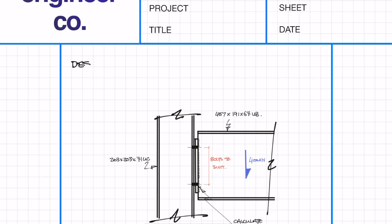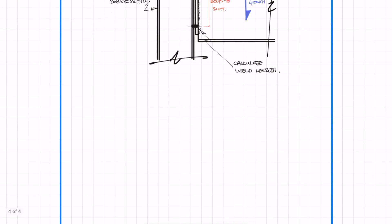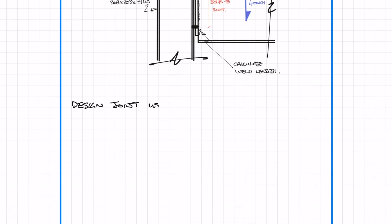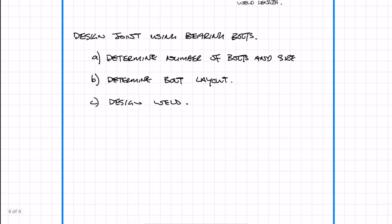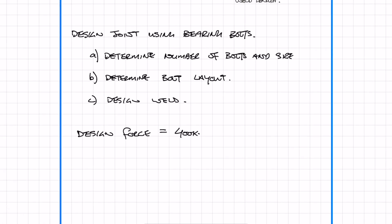Next we're moving on to the design of a simple pin joint end plate connection detail. We want to determine the number of bolts and the size of the bolts, then determine the bolt layout and also design the weld. The design force is 400kN, the plate steel grade is S275 and the bolt grade is going to be 8.8.